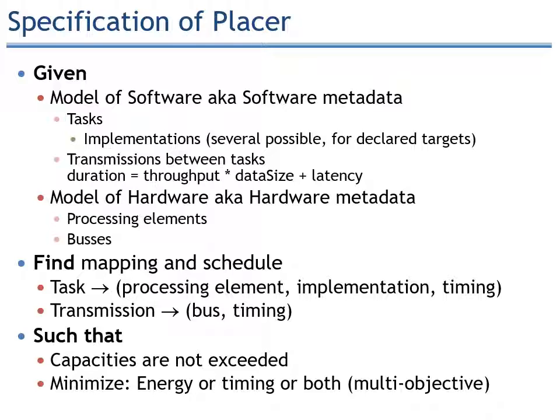You also have the buses, which define the throughput and latency, and also the connectivity. The mapping includes where tasks execute, what is the implementation, what is the timing, and which transmissions route on which buses. You also have some degree of freedom to express the objective function — typically you can minimize the energy, the timing, or both in a multi-objective fashion.